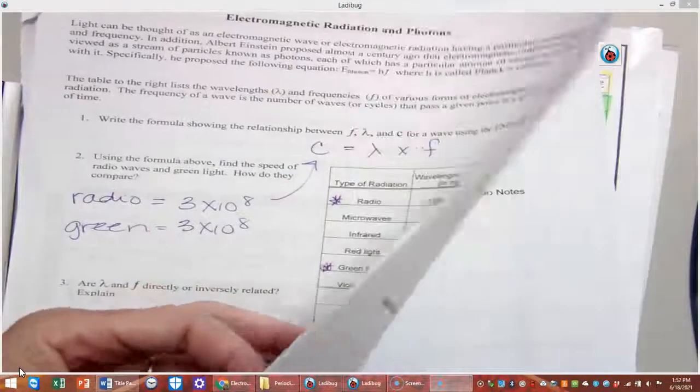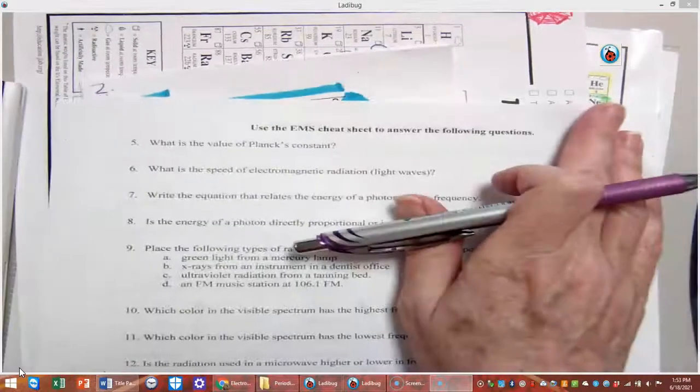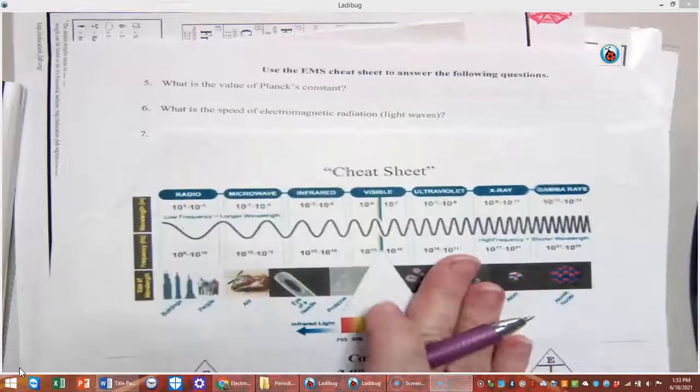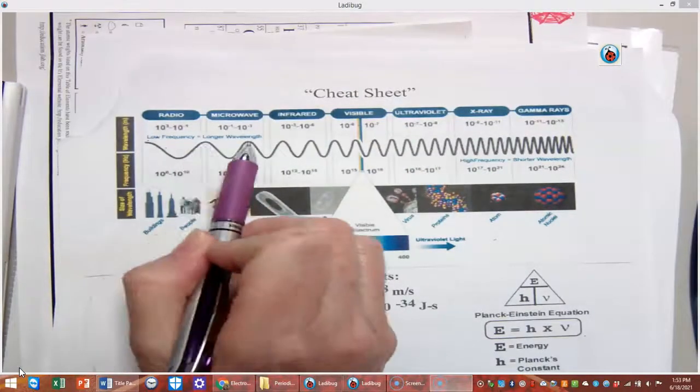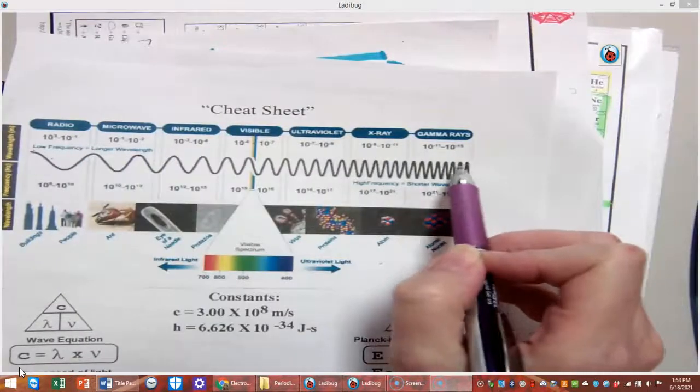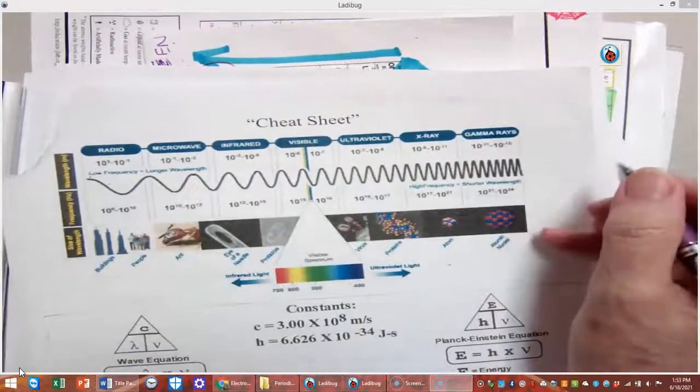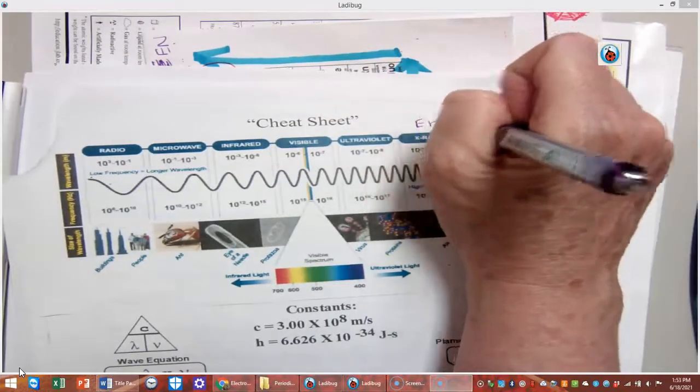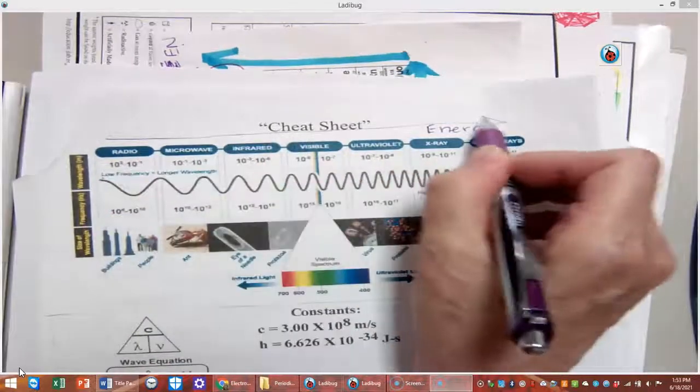Then when you flip over the page here, we're going to use this to answer these questions. Everything you need to know is on the cheat sheet. And again, notice low frequencies, long wavelengths, high frequencies, short wavelengths, and what happens? If our wave is coming faster and faster and faster, what happens to the energy? The energy is also increasing going this way.